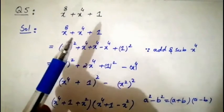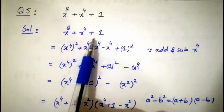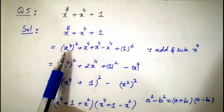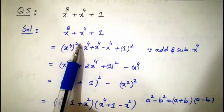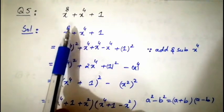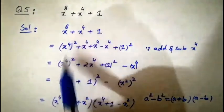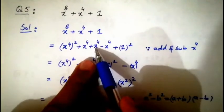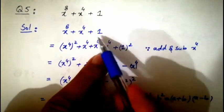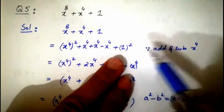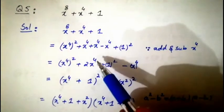Question number five: x⁸ + x⁴ + 1. Moving to the solution: x⁸ can be written as (x⁴)². We add and subtract x⁴ for completing the square. So: (x⁴)² + x⁴ − x⁴ + 1. Adding x⁴: two times x⁴ appears. Subtracting x⁴ keeps the expression unchanged.